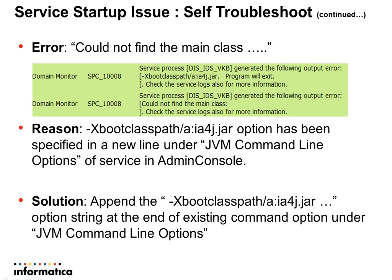Another error is 'could not find main class.' If this appears in the domain log along with another message referencing XBootClassPath with the IA4J jar, this implies the XBootClassPath has been specified on a new line in the JVM command line options of the service in the admin console. The solution is to remove the new line and append the XBootClassPath or the entire IA4J trace option string at the end of the existing option string.